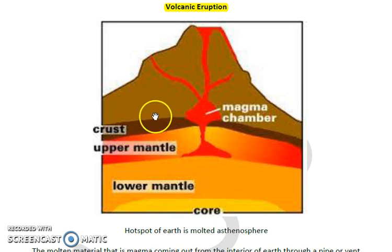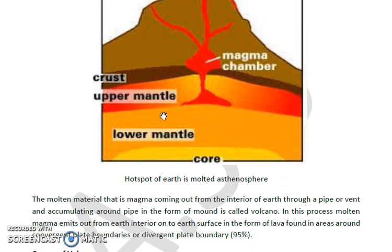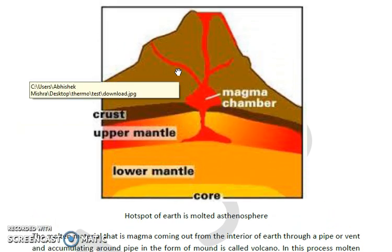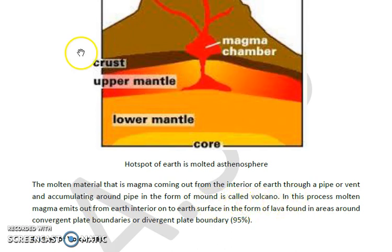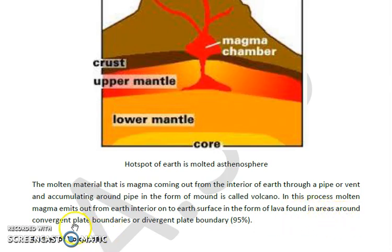These are some of the hot spots of Earth in the molten asthenosphere. The molten material which comes out from the earth's interior inside the volcano is referred to as magma. Magma coming out from the interior of the earth through a pipe or vent and accumulating around the pipe in the form of a mound is called a volcano. During this process, the molten magma comes out as lava on the surface of the earth around convergent or divergent plate boundaries, where 95 percent of volcanic activity occurs.